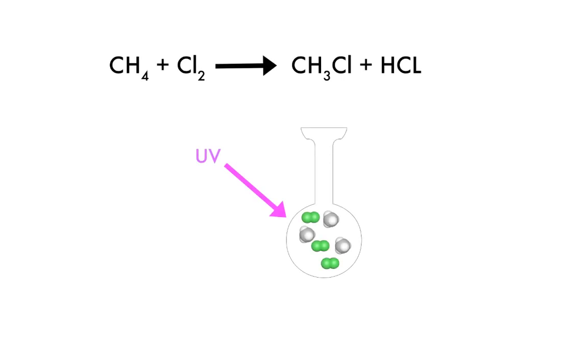When a mixture of chlorine gas and methane gas are illuminated with an ultraviolet light, a violent reaction occurs.